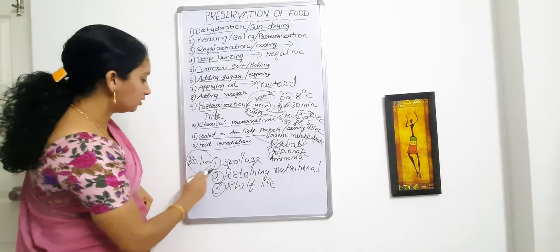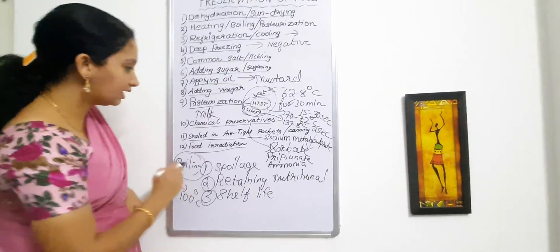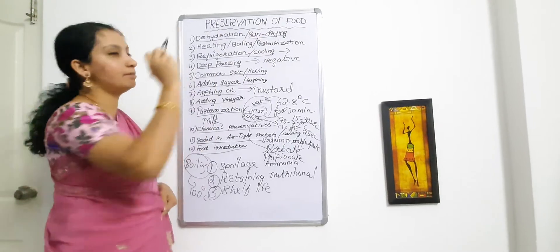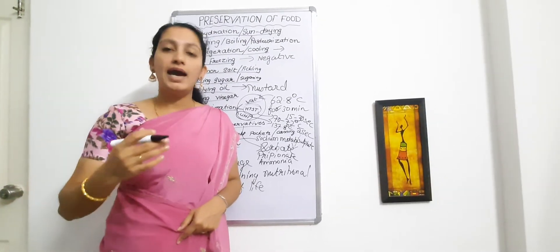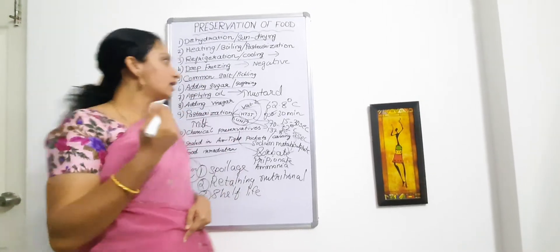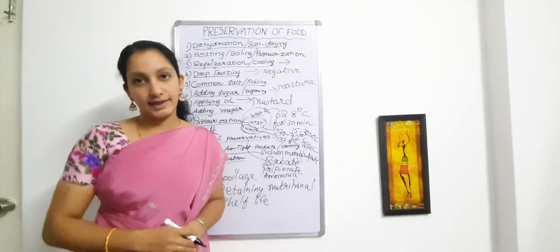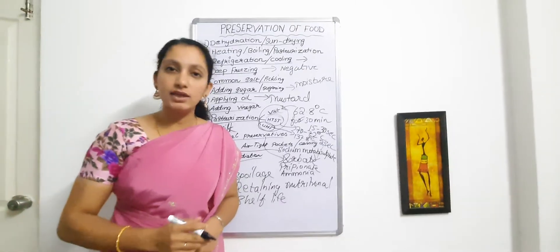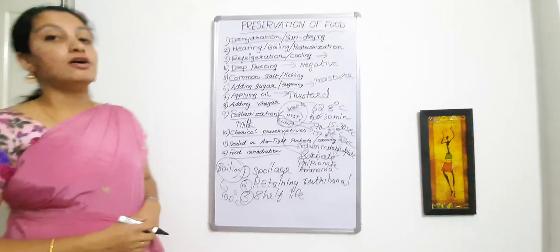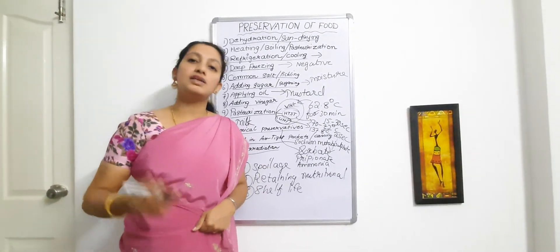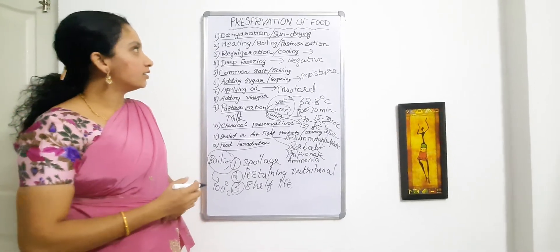We also have the boiling or heating method, where the temperature is 100 degrees Celsius. Boiling and pasteurization both come under heating methods, but the temperatures used and the types of food treated are different. Regarding the sugaring method, sugar reduces the moisture content present in food — since moisture favors the growth of microorganisms, reducing it prevents microbial growth. These are the different food preservation techniques, coming under either physical methods or chemical methods.